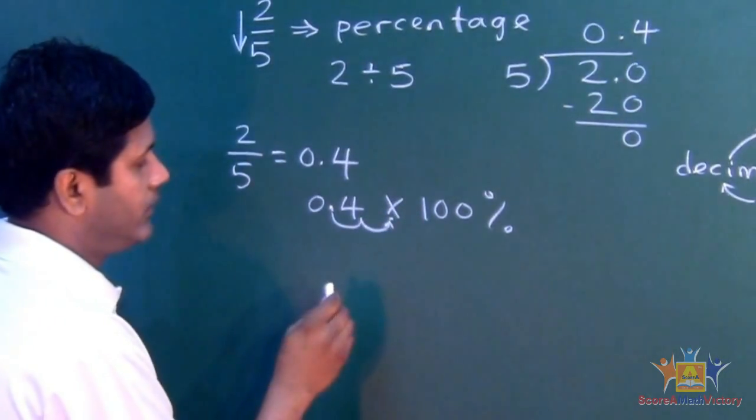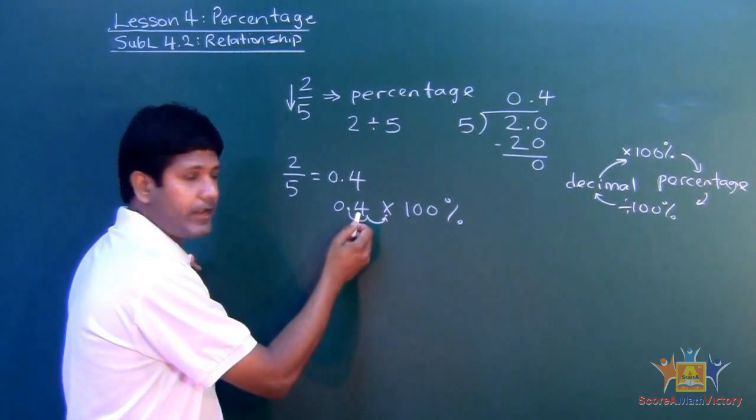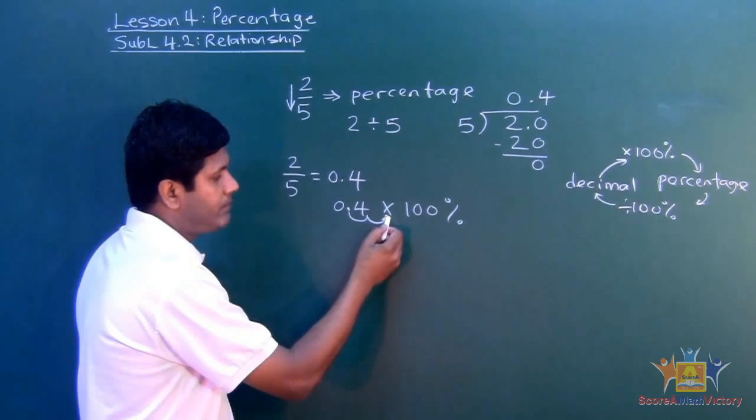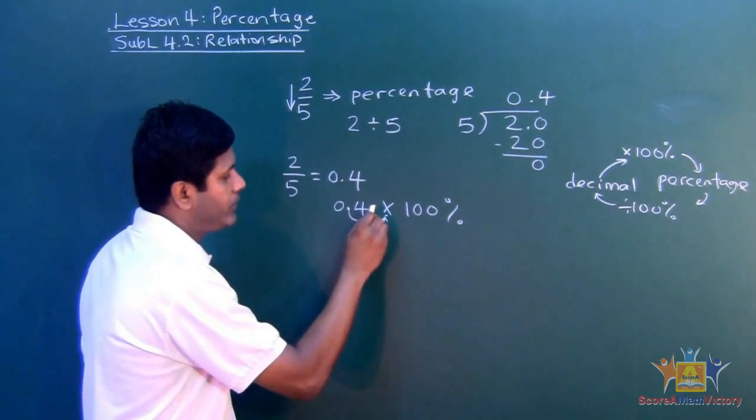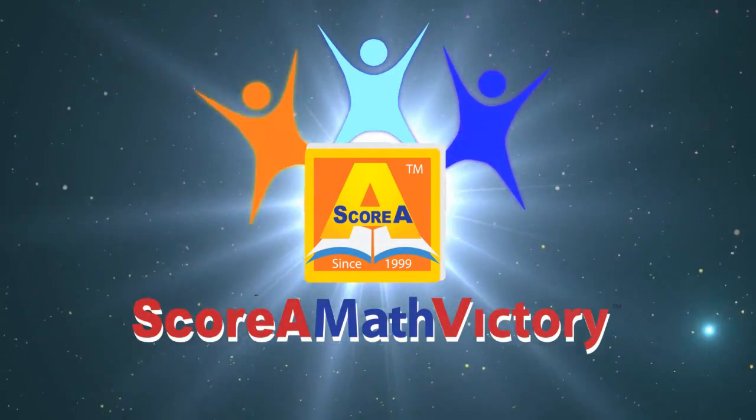Let's put the decimal right there. The first bubble has four in it. The second bubble has nothing, so you put a zero.